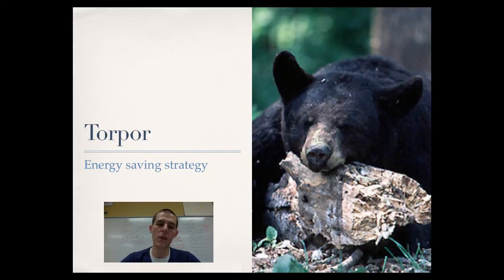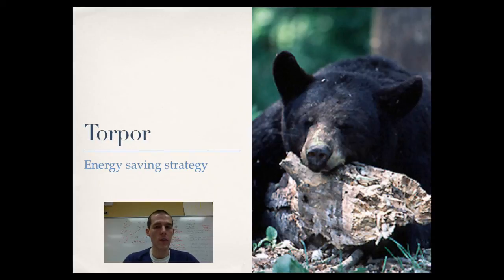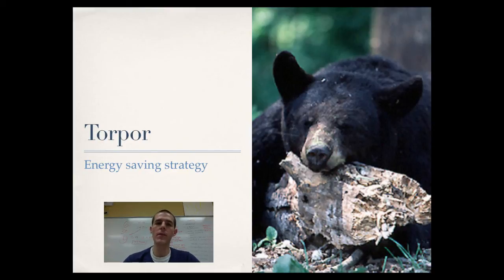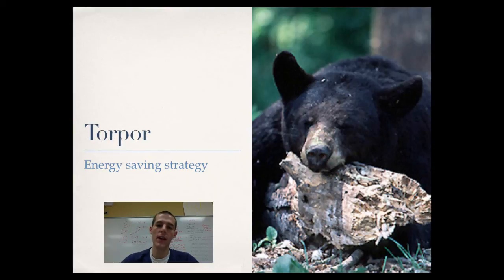The last topic for the day is torpor. Torpor is a state of inactivity and lowered metabolism used as a survival mechanism to save energy. We'll talk about hibernation in a second — that is the well-known form of torpor. But many organisms live in environments where it gets really hot during the day, and they need to be inactive at night. They'll gather food during certain parts of the day, and during inactive periods they go into a state of torpor — not quite sleeping, but a really slowed metabolic activity state where they're saving energy rather than burning it while not gathering food.